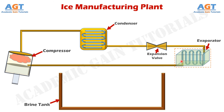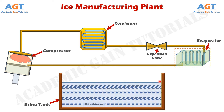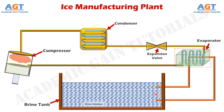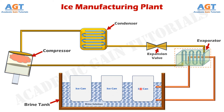This evaporator is connected to a brine tank. A brine tank reserves a highly concentrated salt-water brine solution inside it. The evaporator is connected to the brine solution through the brine tank. Inside the brine tank, and on the brine solution, we have large ice cans sized according to the ice blocks to be produced. Inside these ice cans we will place water that will be frozen into ice blocks when we supply the cooling effect from the evaporator to the brine solution inside the tank.